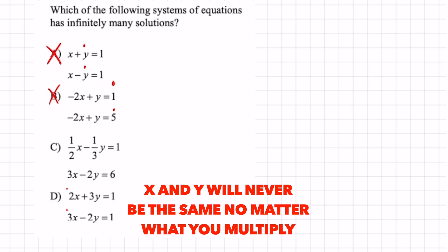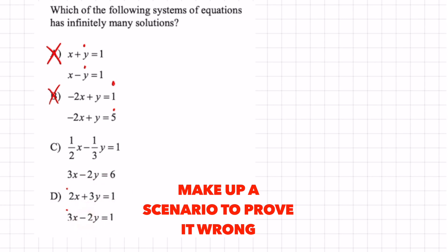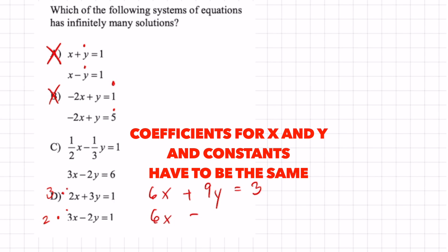For letter D there is nothing that I can multiply both of these equations by to get the same number. For instance, if I try to get 6 and I multiply this by 2 and this by 3, there is nothing that I can ever do to make the numbers the same because I'm going to end up getting 6x plus 9y equals 3 and the bottom is going to be 6x but the y's won't be the same and we can cross off D.